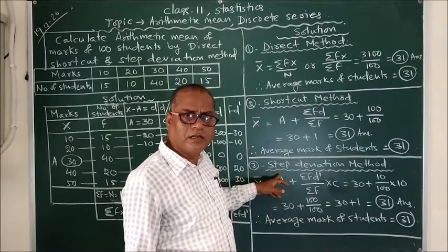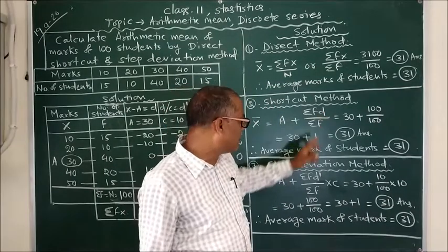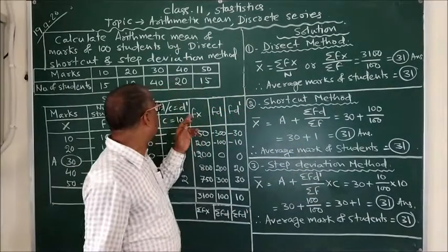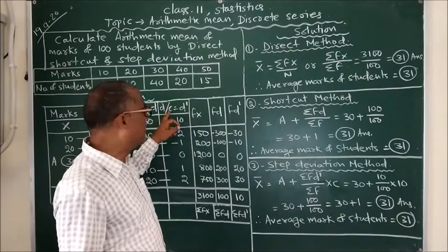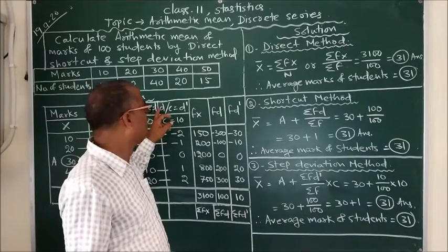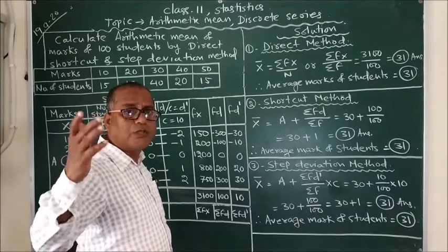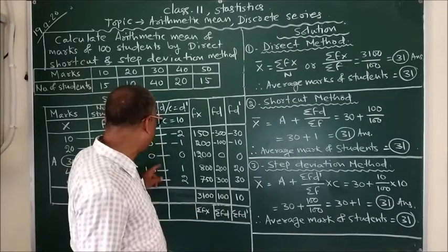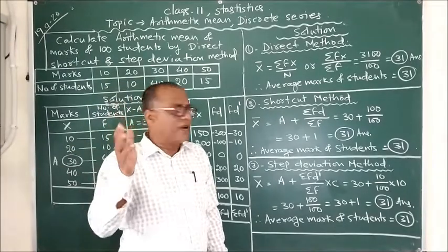Now come to step deviation method. Here instead of d we will take d dash. To find d dash, we need to divide d by a common factor. How to select a common factor? The greatest number that is divisible by all the values should be the common factor.